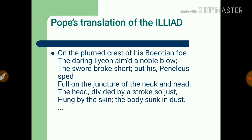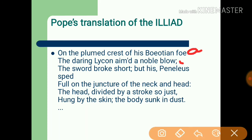Pope translated the Iliad in heroic couplets. Here is an example: 'On the plumed crest of the Boeotian foe, the daring Lichen aimed a noble blow.' You can see the rhyme scheme A A, B B, C C. Another couplet: 'The sword broke short; but his Panellius sped full on the juncture of the neck and head; the head divided by a stroke so just hung by the skin, the body sunk in dust.'